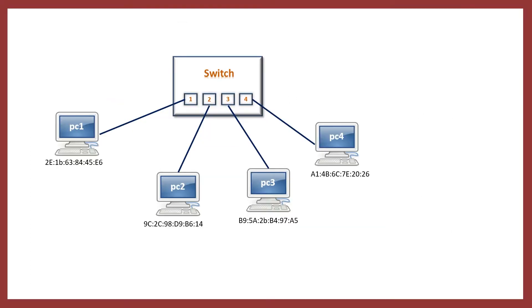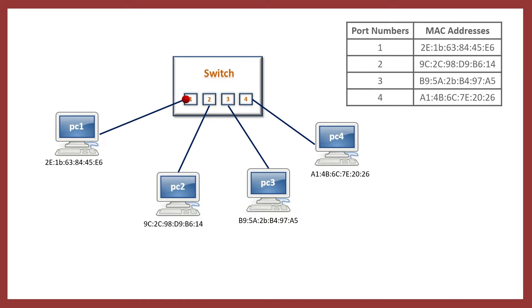Let's take an example: there are 4 PCs connected with the switch device. When PC1 transmits data to PC2, the data first arrives at the switch device. The switch looks in its table where MAC addresses and port numbers are stored. This table helps to know which device is connected to which port number, and then transmits the data to the correct port so the data packet would only go to that computer.